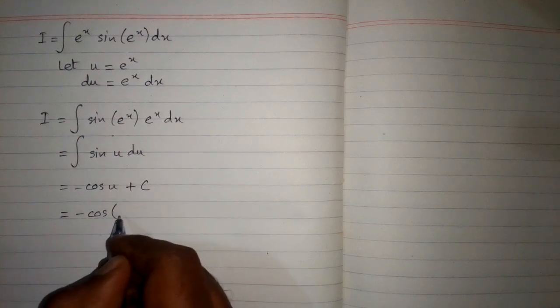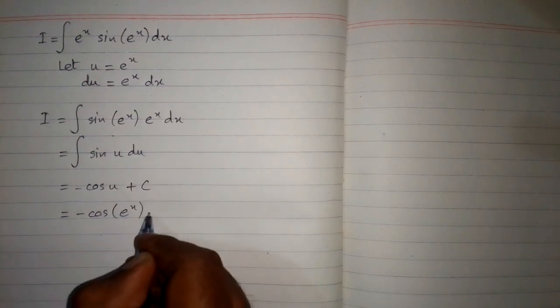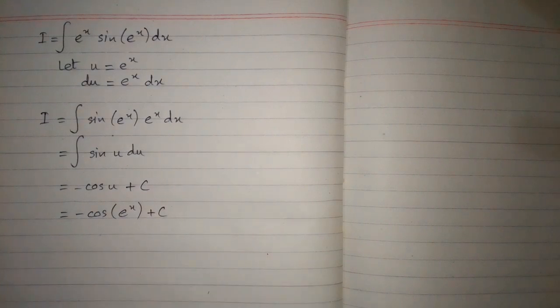So the final answer is -cos(e^x) + c, where c is the constant of integration.